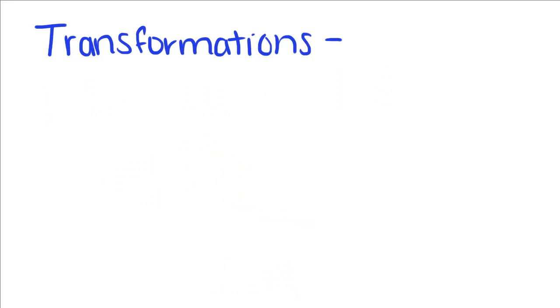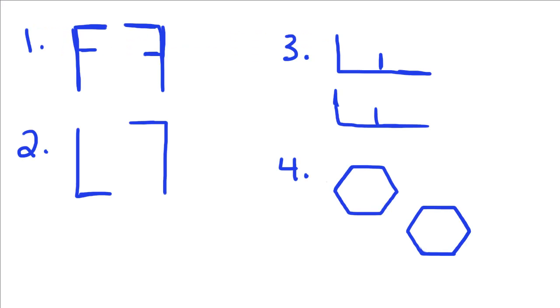Let's do some practice with these transformations, and we're just going to describe them. I had the letter F right here, and now I have it like this. If we were to describe that, we would say that it is a reflection, because it was literally flipped over to look like that.